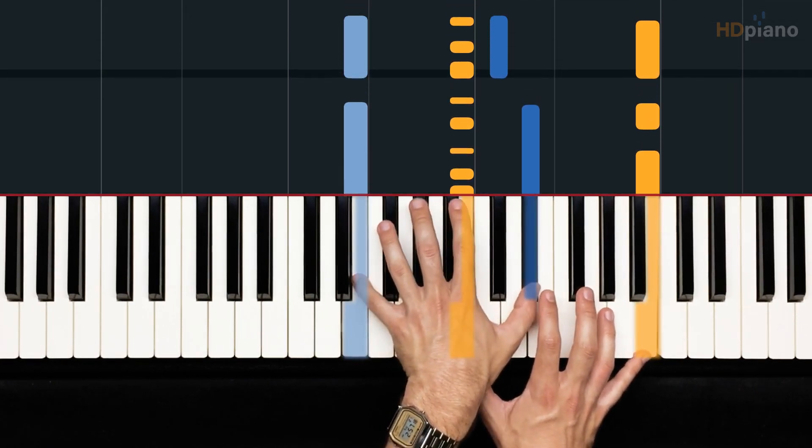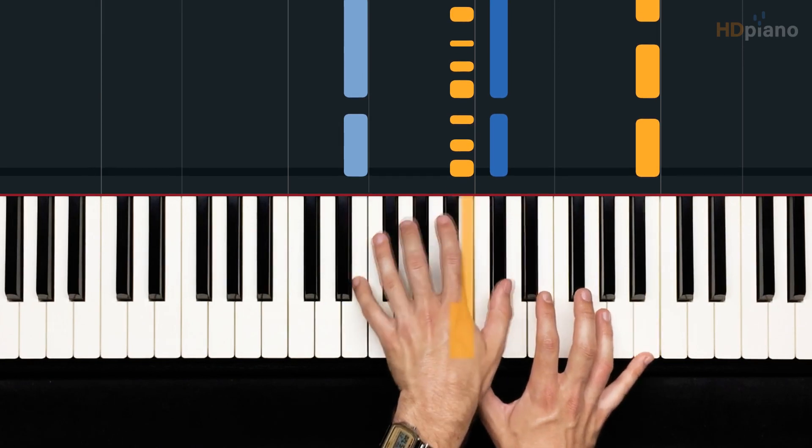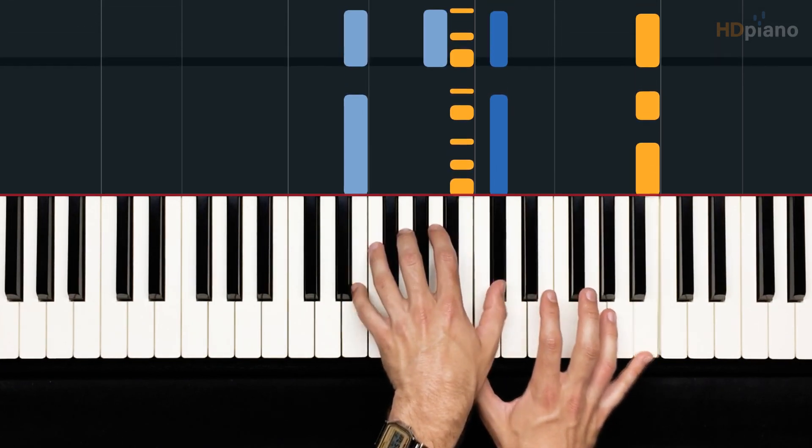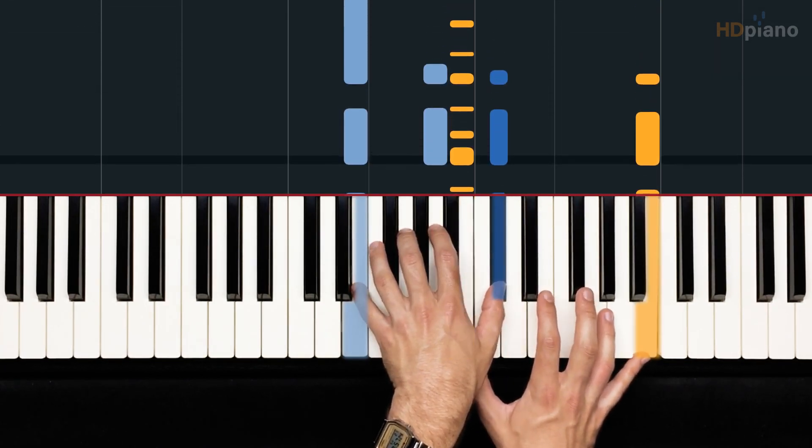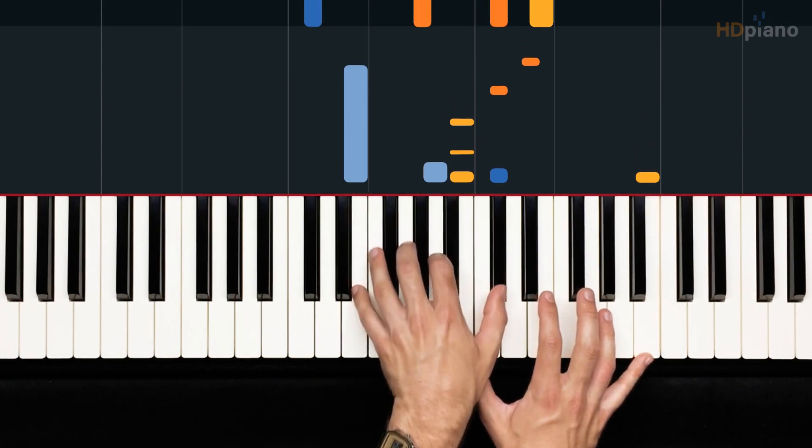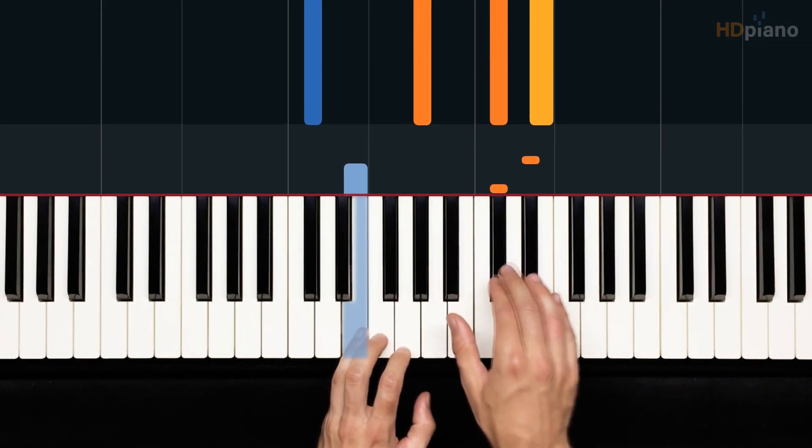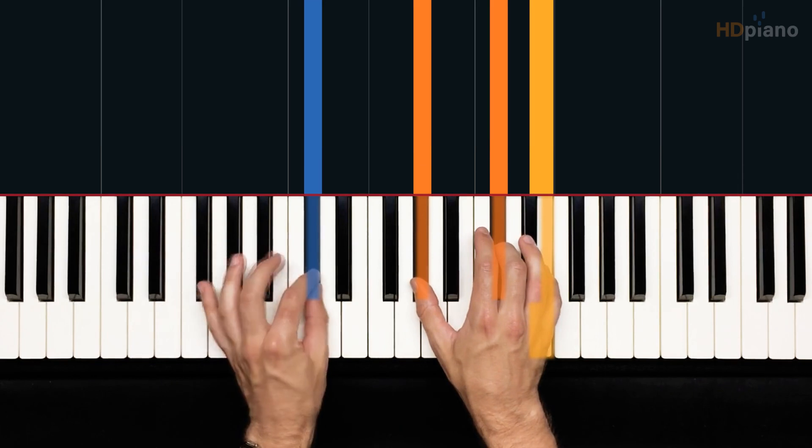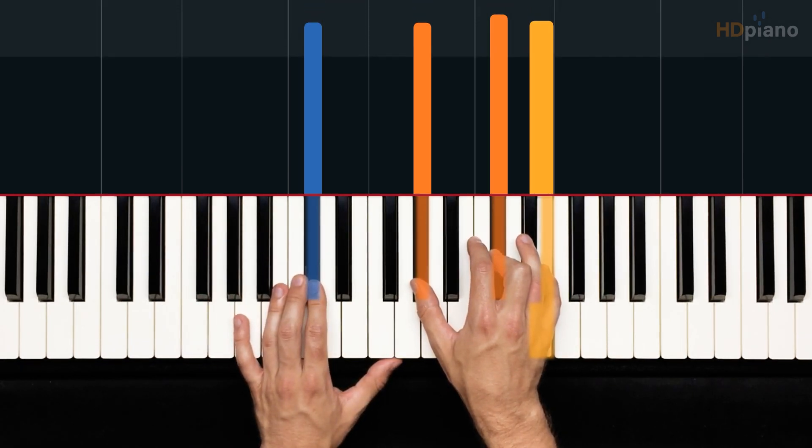B, to D-sharp, to C-sharp, to A, B, C-sharp, D-sharp, boom. And we land at the pre-chorus on a C-sharp minor chord.